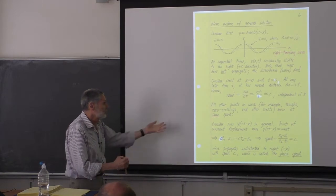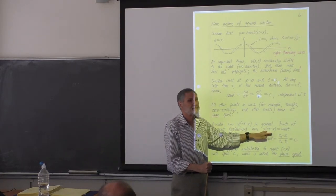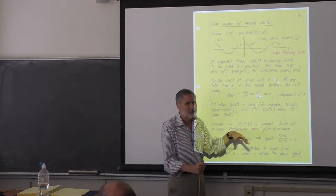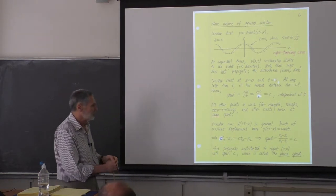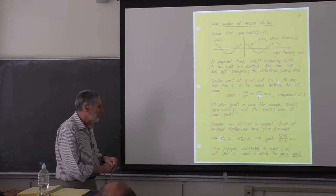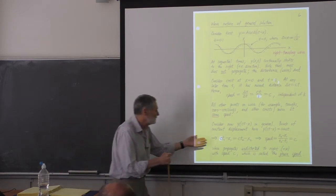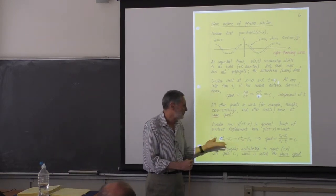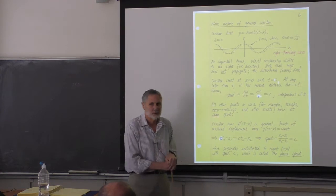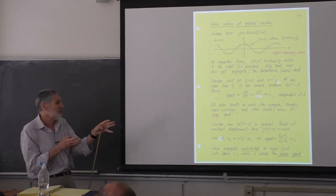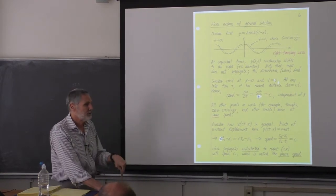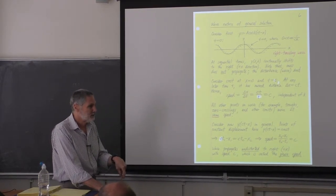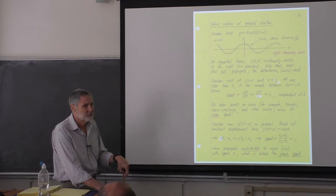These are called non-dispersive or dispersion-less waves. We use the word dispersion when the speed depends upon the wavelength. Suppose we have a pulse on the string. From Fourier analysis, it's composed of different wavelengths. If those different components move at different speeds, the pulse won't maintain its shape — it will spread out and disperse.